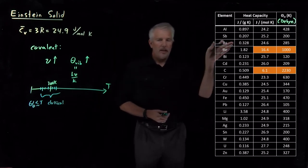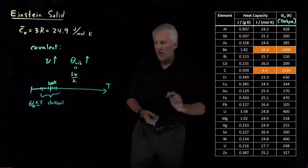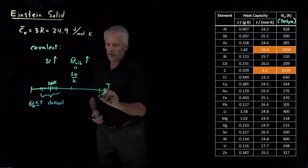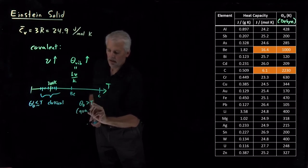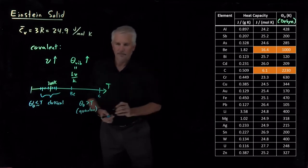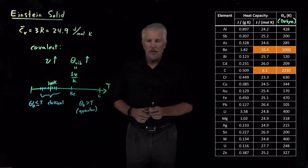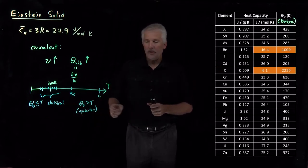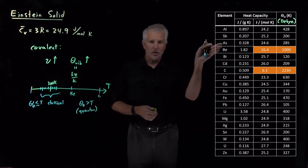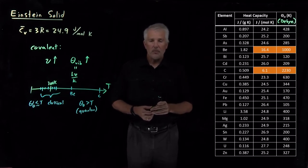On the other hand, if you're beryllium, your Debye temperature is 1000 Kelvin. If you're carbon, it's 2200 Kelvin — way above room temperature. Under these circumstances, the Debye temperature is much larger than the actual temperature, and that system is going to behave very quantum mechanically. It's not surprising then that the Equipartition Theorem doesn't work for carbon and beryllium — they're not in the classical limit. We'd have to heat them to near 1000 or 2200 degrees before they'd begin to behave classically.